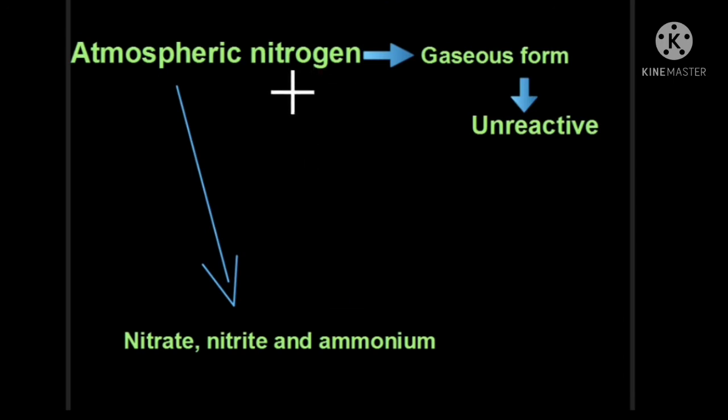The atmospheric nitrogen is 78%, which is in gaseous form and is unreactive in nature. That is why plants are not able to use it directly. This atmospheric nitrogen needs to be converted into nitrate, nitrite, and ammonium forms. Several bacteria help in this process.